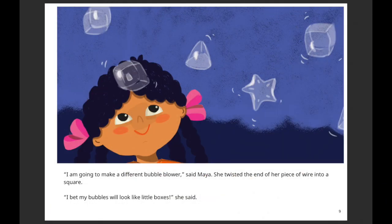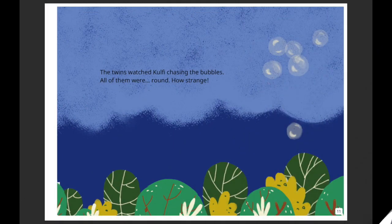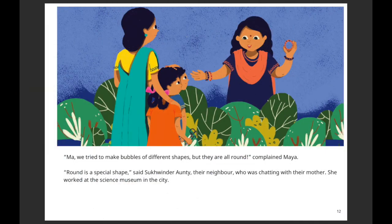'I'm going to make a different bubble!' said Maya. She twisted the end of a piece of wire into a square. 'I bet my bubbles will look like little boxes,' she said. 'Let's make other shapes too,' said Manu, making a star shape — he was eager to see bubbles of different shapes. But the twins watched as Kulfi chased the bubbles, and all of them were still round.